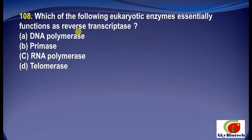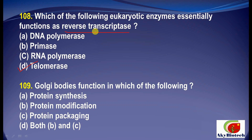Question 8: Which of the following eukaryotic enzymes essentially functions as reverse transcriptase? We have four options, and the correct answer is telomerase — the eukaryotic enzyme that functions as reverse transcriptase. Question 9: Golgi bodies function in which of the following? The correct option is D — both protein modification and protein packaging.